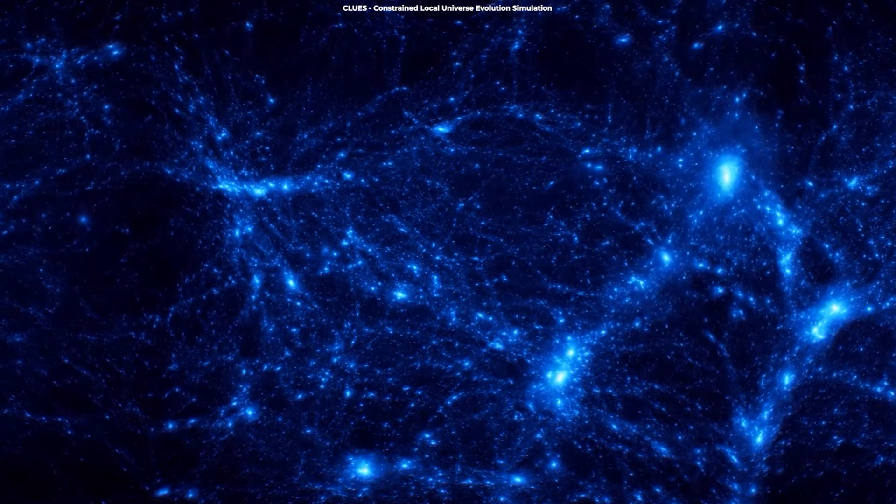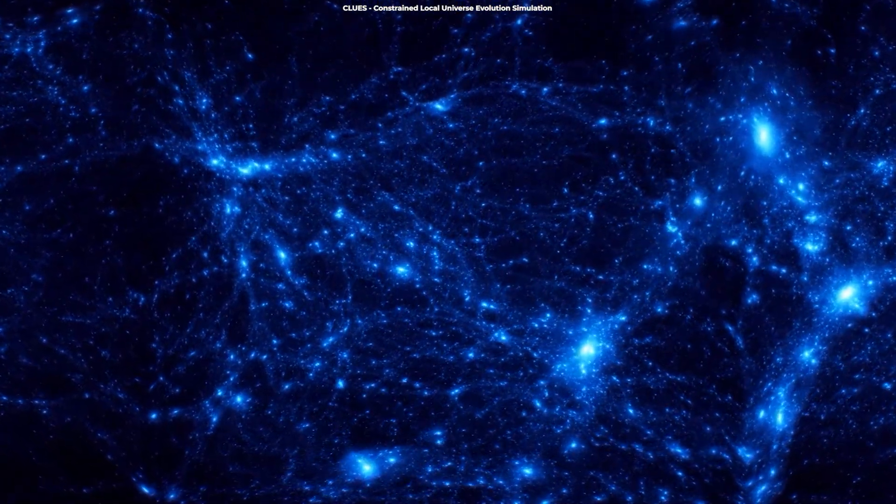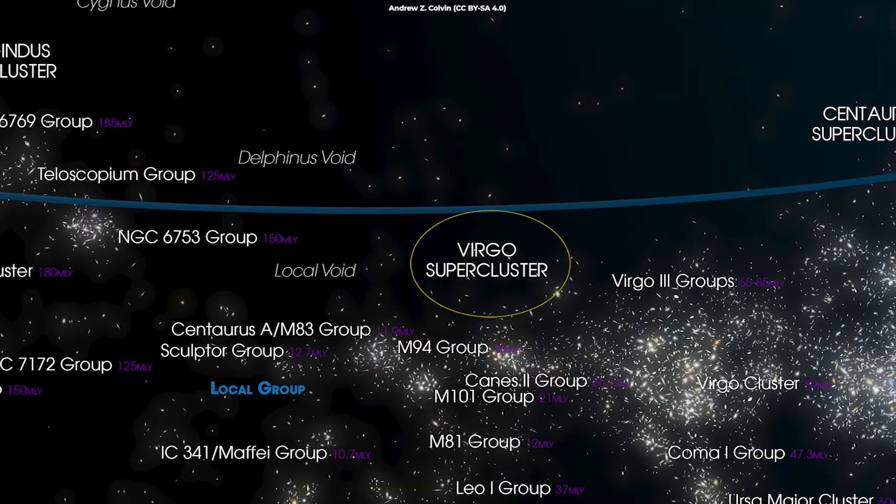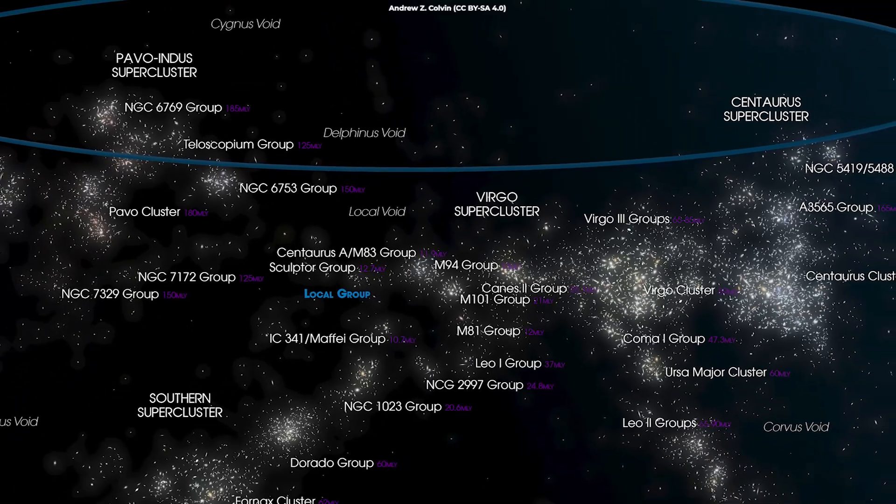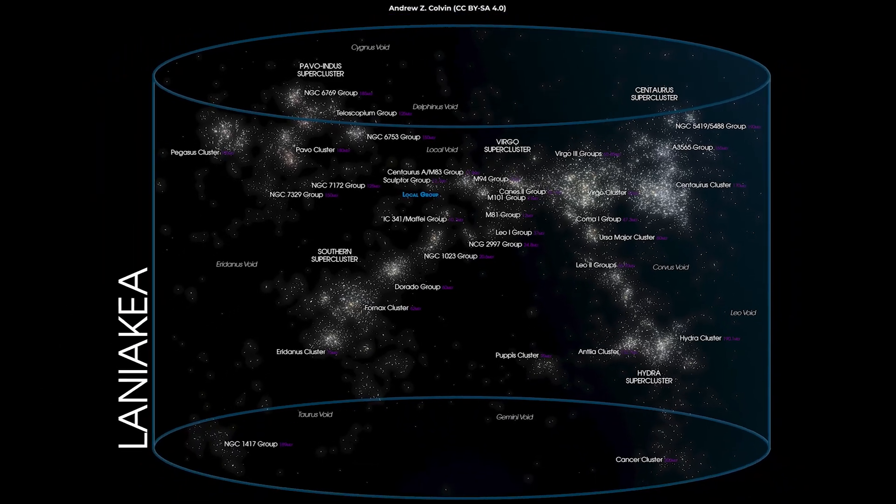The KBC void is believed to be surrounded by a shell of galaxies that grows thicker as it spreads further out. Our home galaxy lies a few hundred million light-years from the center of the void in a supercluster of galaxies known as the Laniakea.